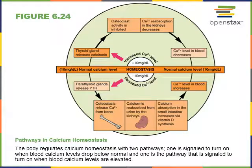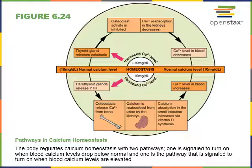Mineral storage is another major function of the skeletal system. Calcium is stored in our bones and can be mobilized from the bone to maintain blood calcium concentration. The breakdown of bone is regulated by the endocrine system. The parathyroid gland detects a decrease in blood calcium below the homeostatic set point of 10 milligrams per deciliter, and will produce parathyroid hormone (PTH), which stimulates osteoclasts — cells in the bone that break down the bone matrix. They break down the hydroxyapatite and release calcium from bone into the blood.